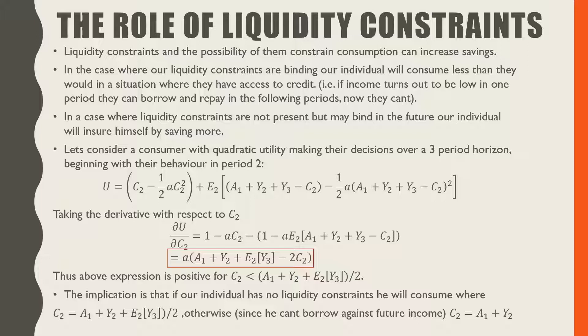Otherwise, since he can't borrow against future income, he'll consume where his consumption is equal to endowment from period one plus his labor income with certainty in period two.